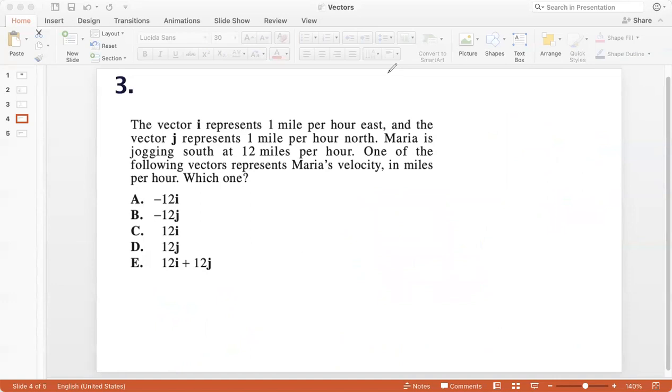Now here we have vector i. Again, you can say i or i-cap. i-cap is preferred because that represents the unit vector. The vector i-cap represents 1 mile per hour east and the vector j-cap represents 1 mile per hour north. So here again, you see that we have exactly what we discussed. i-cap is 1 mile per hour east. So i-cap is in this direction and j-cap is 1 mile per hour north. This is east, this is north, this is west and this is south.